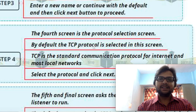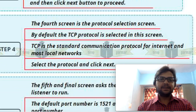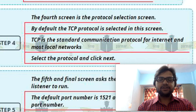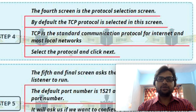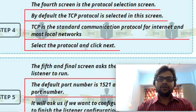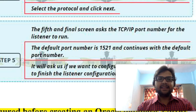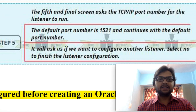In the fourth screen it asks for a TCP protocol. TCP stands for Transmission Control Protocol and is a standard communication protocol for internet and most local networks. TCP helps us with transmission of our data — the requested data. We select the TCP protocol; by default TCP is already selected, so we don't change it. In the final screen, the TCP/IP port number is displayed — our port number is 1521. Click next and our listener configuration is finished.